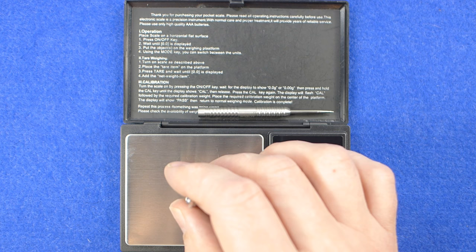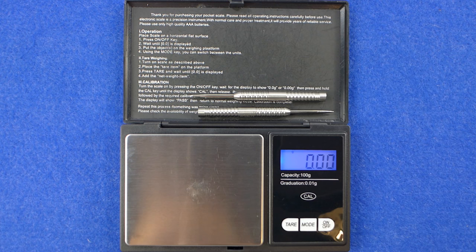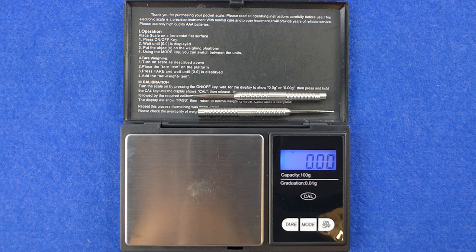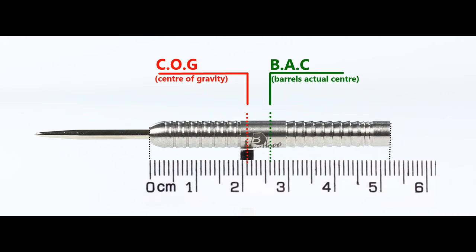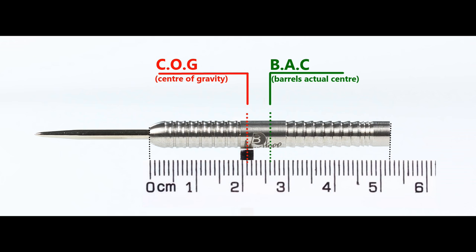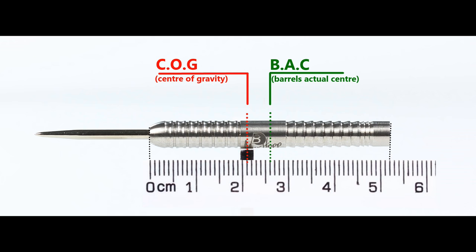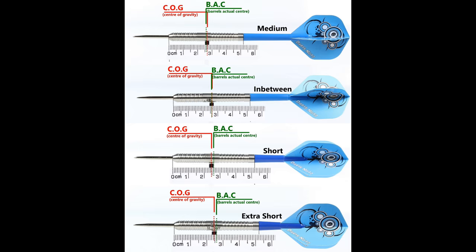Weight: 22.1 grams, 22.08 grams, and 22.09, so very closely matched. The full setup is 23.97 grams. With nothing attached the balance is front weighted, and with the supplied setup it moves just slightly behind the center of the barrel.